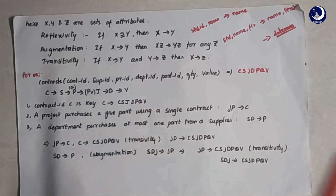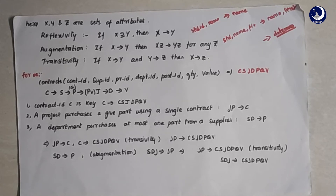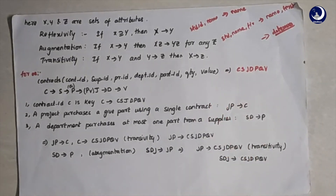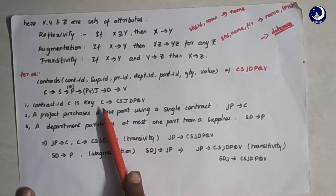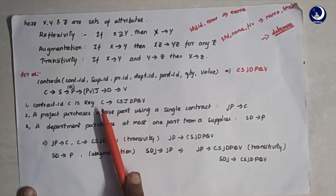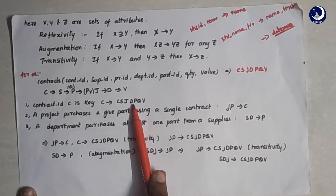The schema represents: a contract C is an agreement with supplier S, who will supply Q items of part P to project J, associated with department D, at value V. The known functional dependencies are: first, C determines CSJDPQV — since contract ID is the key; and second, JP determines C — because a project purchases a given part using a single contract.